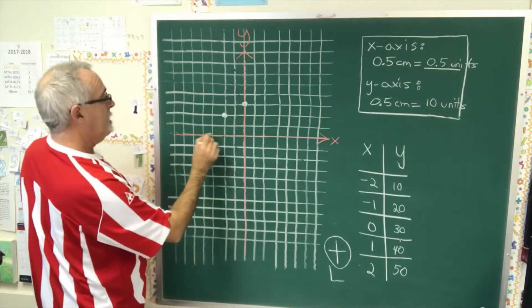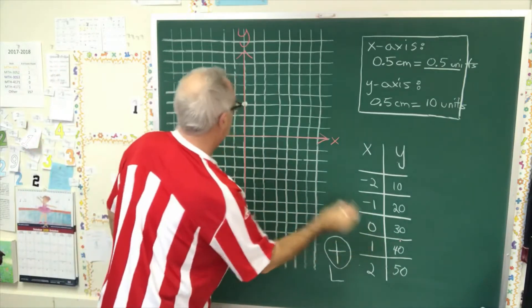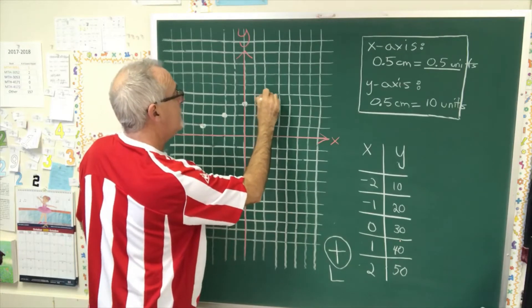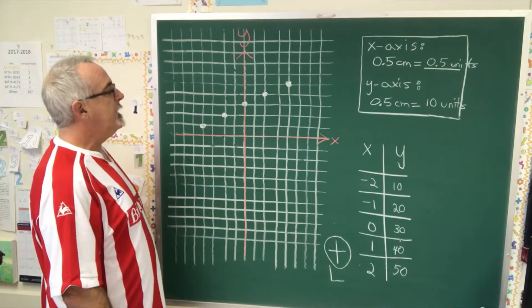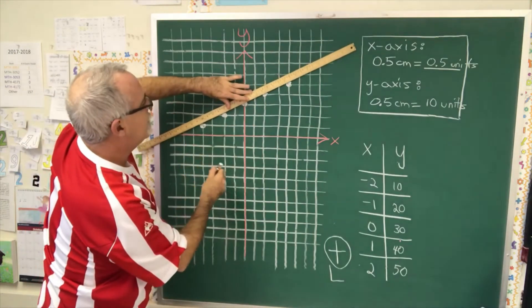Negative 2,10, therefore, is here. 1,40 is here. And 2,50 is here. And now I'm going to draw a line through this. It turns out this was a linear function that I graphed.